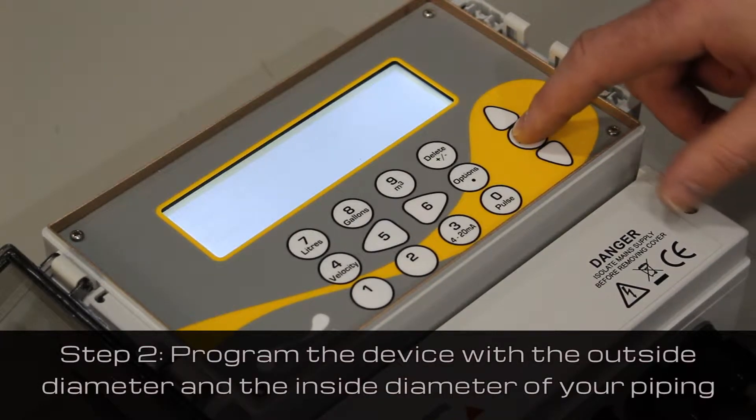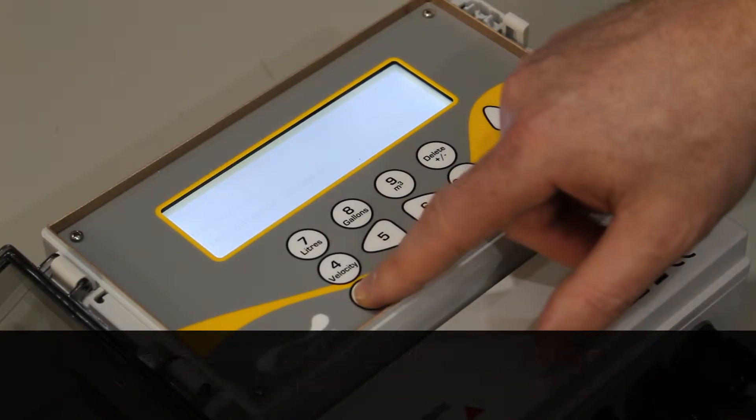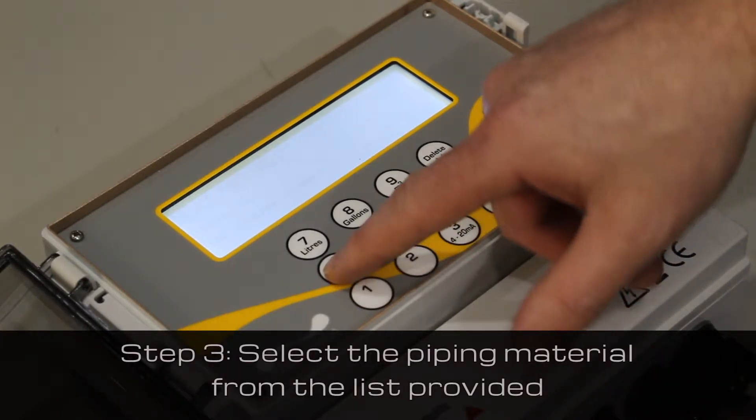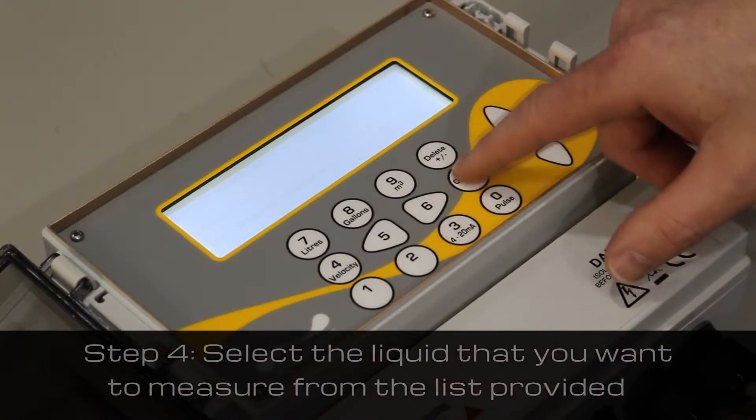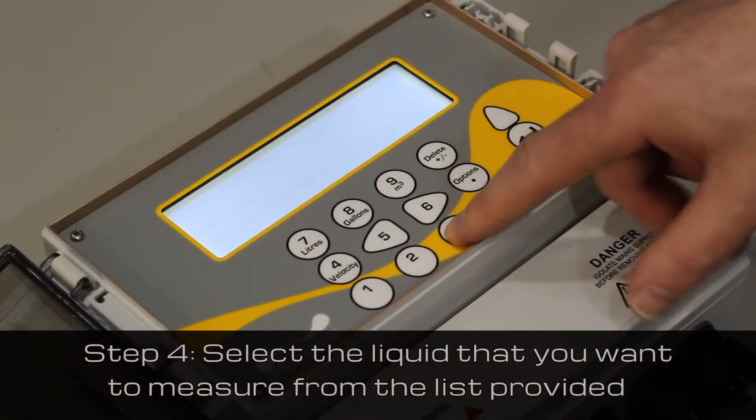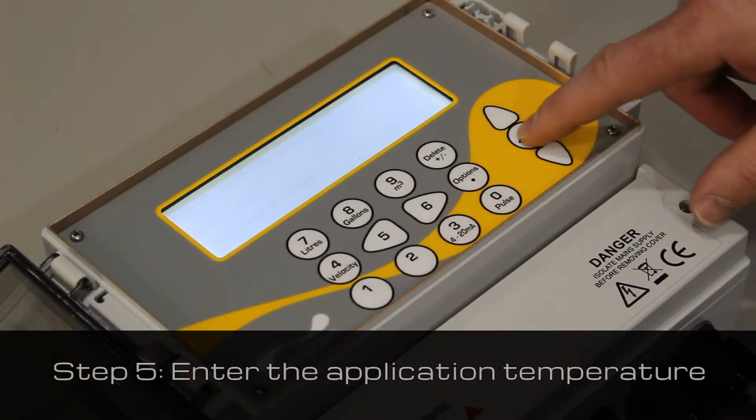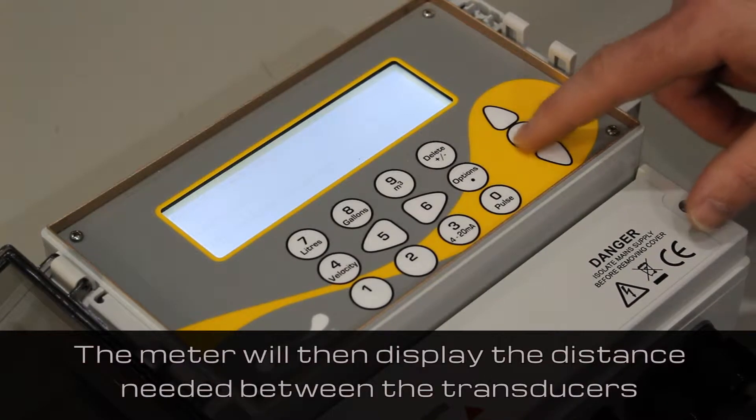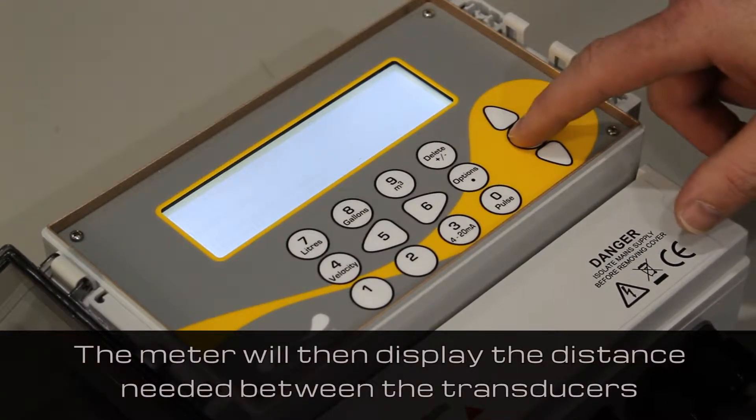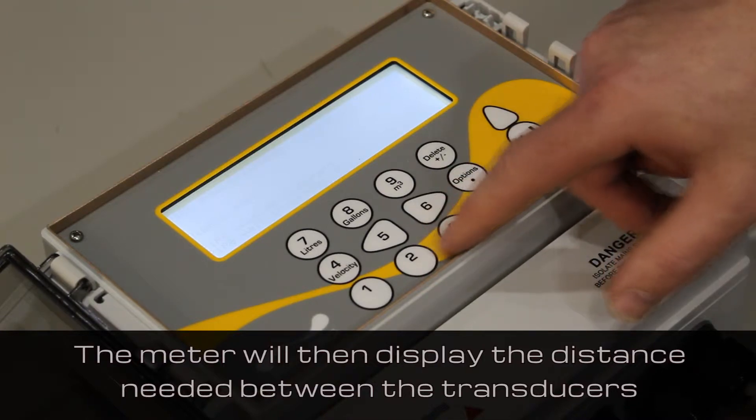You will need to program the device with the outside diameter and the inside diameter of your piping. Then select the piping material from the list provided. Next, select the liquid that you want to measure from the list provided. Enter the application temperature. The meter will then calculate the distance needed between the transducers and will display it on the screen.